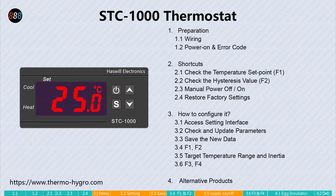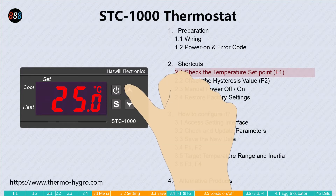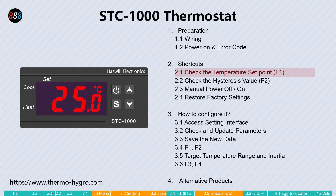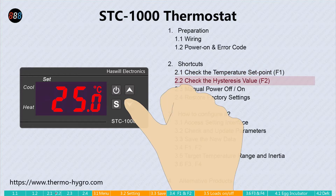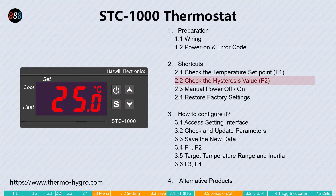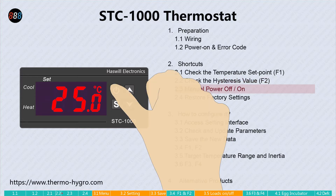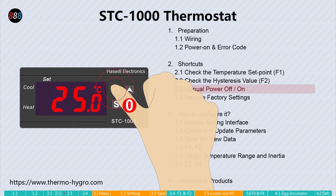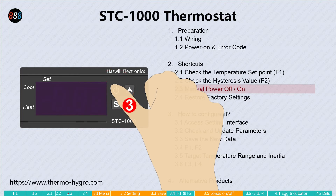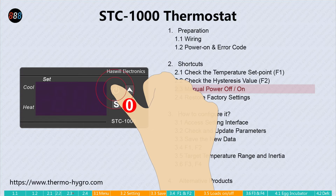Let's learn the shortcut keys. Under normal conditions, press the up key to check the temperature set point. It will return to the normal state in two seconds. Press the down key to check the hysteresis value. Press and hold the power key for three seconds to turn off the power to the motherboard. Do it again to turn it on.